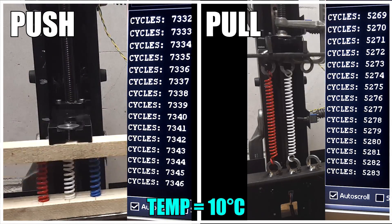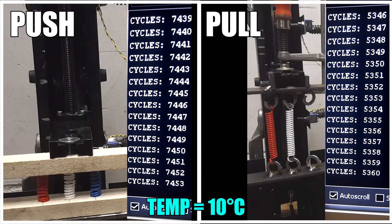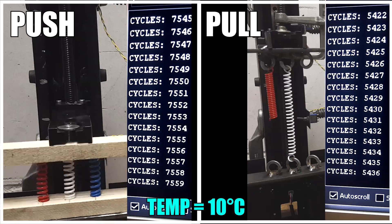After about 5,400 cycles the PETG pull spring broke as well.